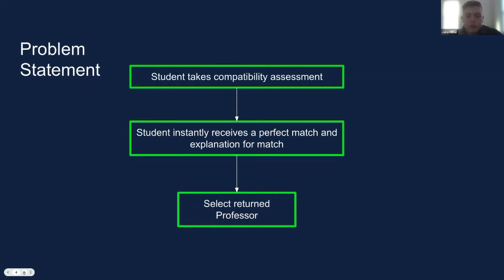Now I'm going to be talking about our current method of tackling this issue. As can be seen immediately, our new method is much more simple and automated. All a student needs to do is take our compatibility assessment and they'll instantly receive a perfect match with an explanation for this match, and all the student has to do is select their preferred professor. It almost completely gets rid of all of the student's manual work. Our algorithm also removes outlier reviews such as biased reviews or generally reviews that have no importance to a student's needs or goals.